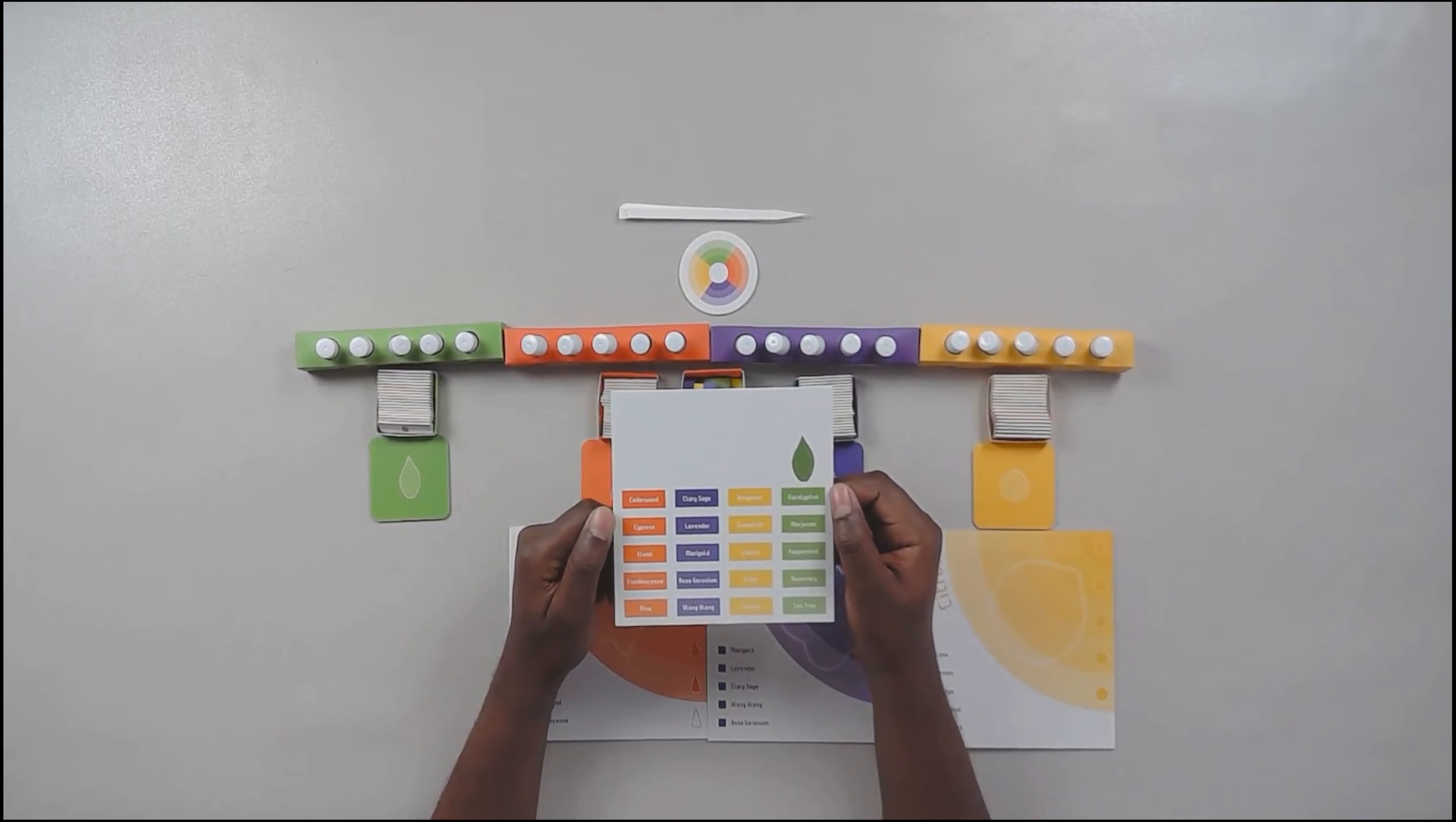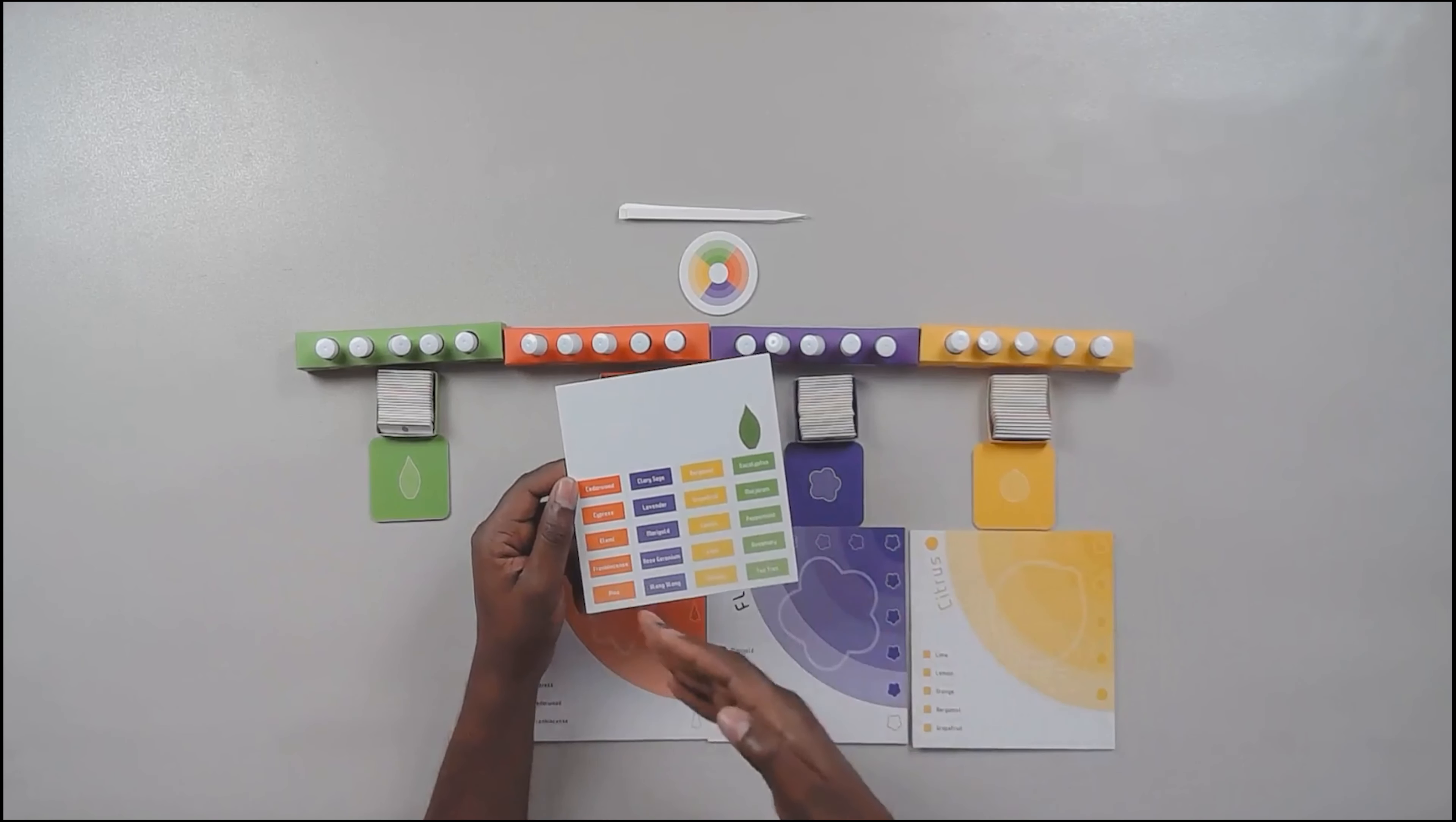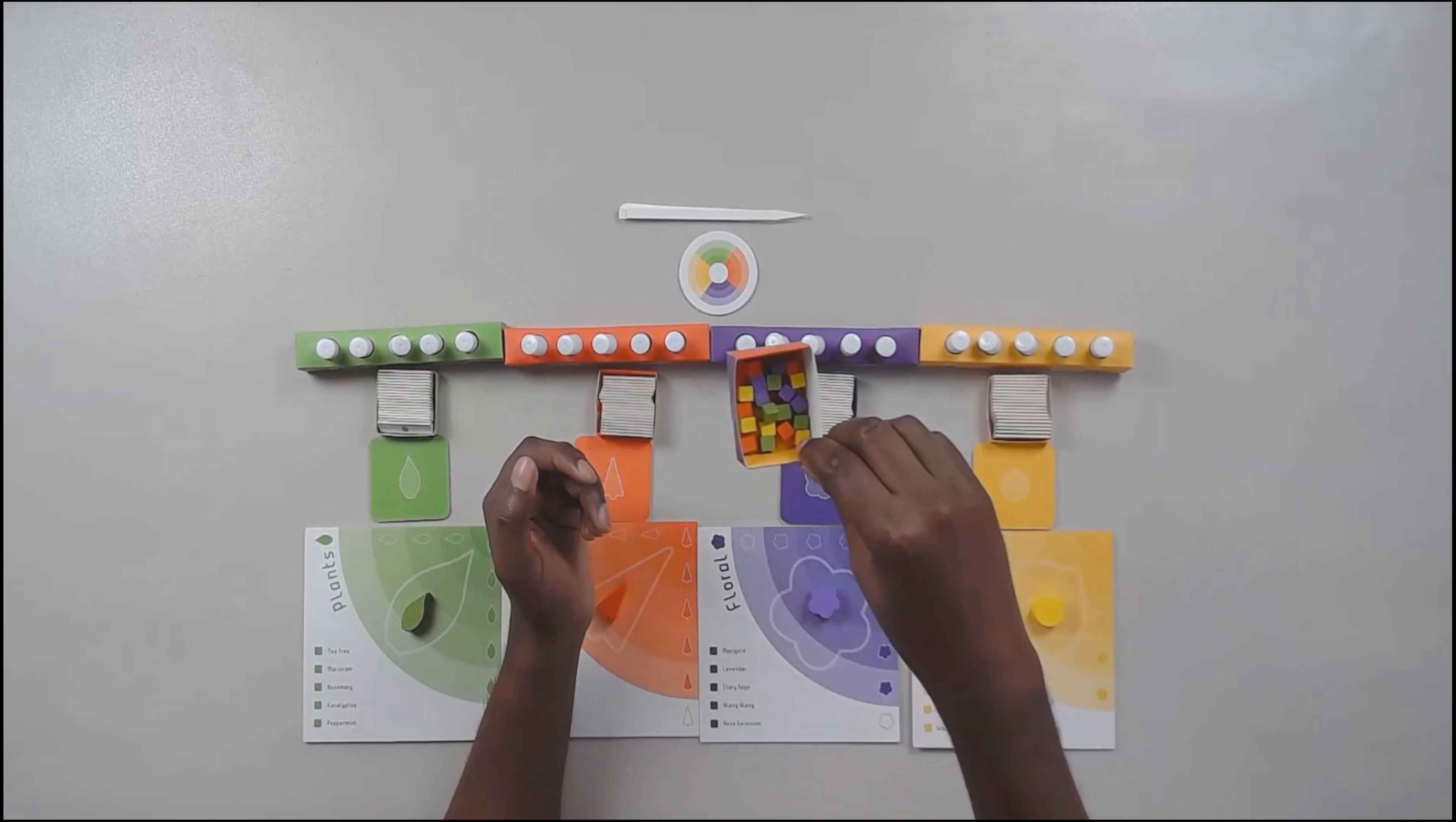On the back of the player boards are also going to be a list of all the scents along with the icon for whose board this is. This is the board for the plant player. So that's why you have the plant icon there and all the various scents from everybody else. You're also going to have five of each different color cube for the various groupings of scents and a small tray with which to put it in.